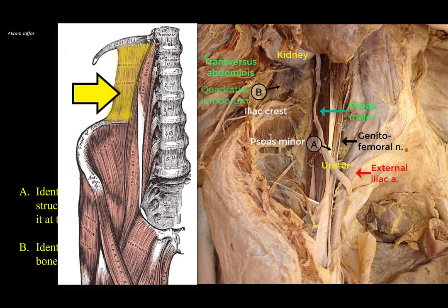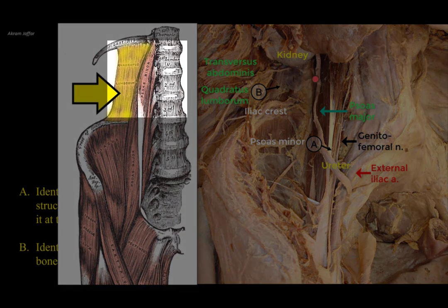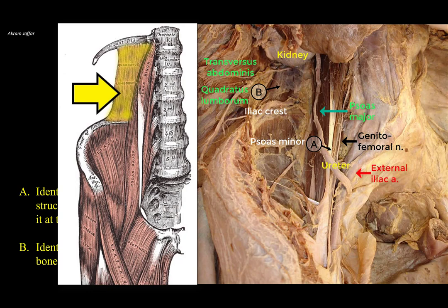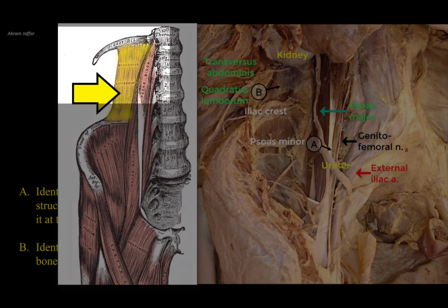The upper part of the quadratus lumborum is covered by the inferior pole of the kidney. Inferiorly, the muscle is attached to the iliac crest. Medially, it is attached to the transverse processes of the lumbar vertebrae, while superiorly — not shown here — it is attached to the twelfth rib.